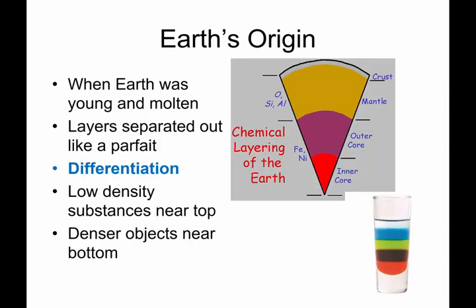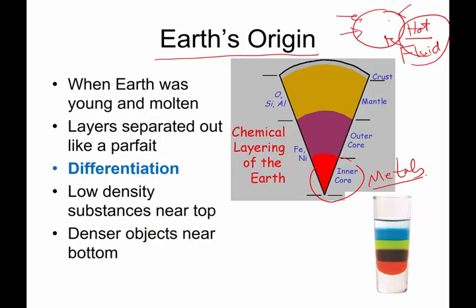When Earth was first created, it was a hot ball of goo. Because it was hot, it was basically a fluid. The center of our planet is an inner core of metals, but the planet was so incredibly hot due to all the collisions of planetesimals that the fluids could separate out, kind of like a parfait.